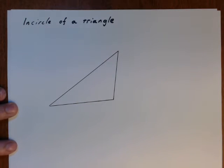To construct the incircle of a triangle, you need to use two different constructions. First, the perpendicular bisector construction and the perpendicular to the point not on the line.